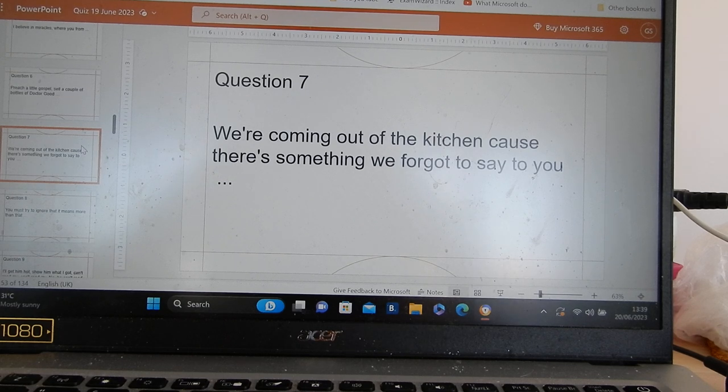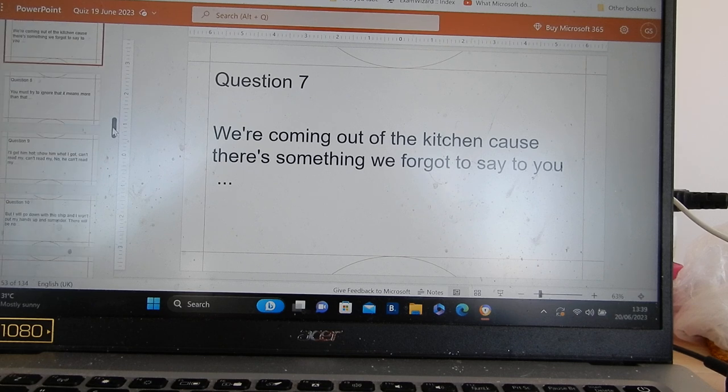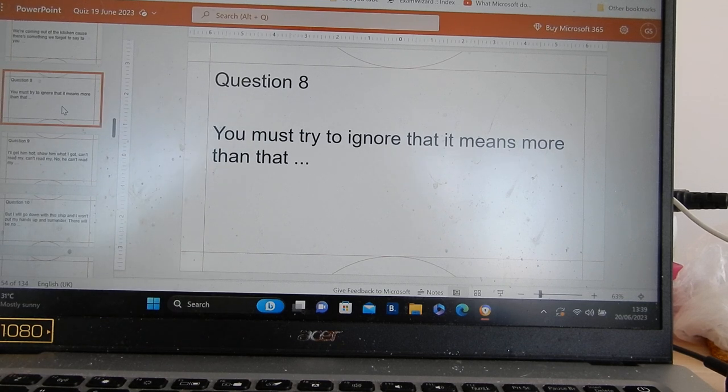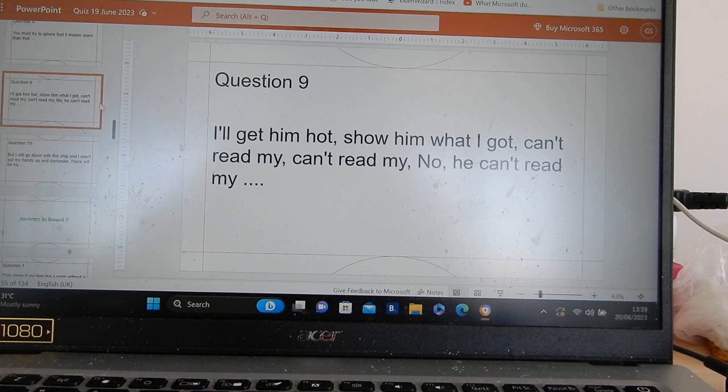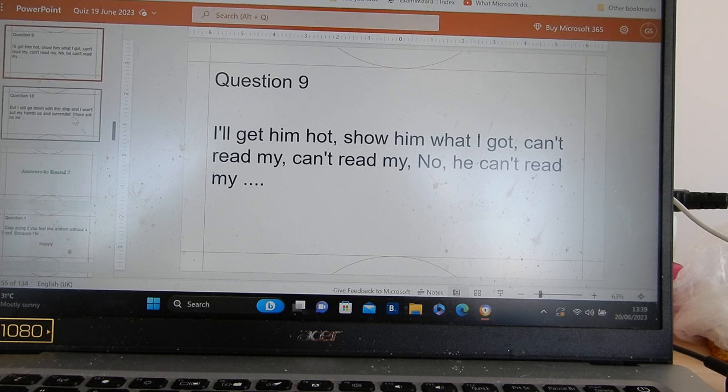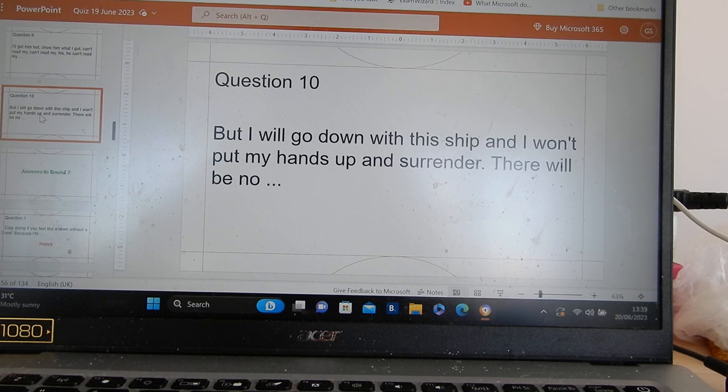We're coming out of the kitchen. Cause there's something we forgot to say to you. Two marks if you get all the words in the correct order. One mark if you're close. You must try to ignore that it means more than this. I get him hot. Show him what I got. Can't read my. Can't read my. No, he can't read my.